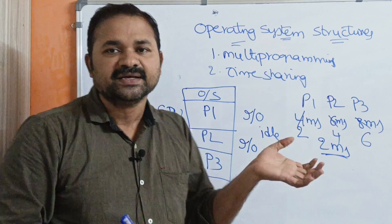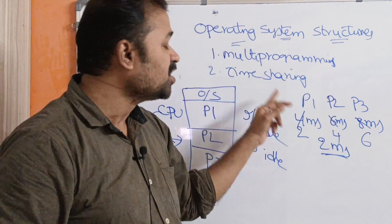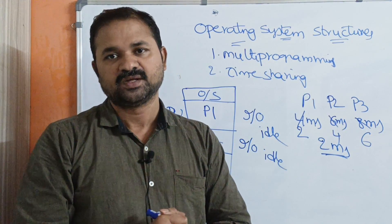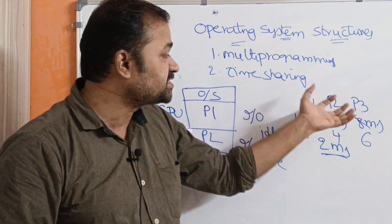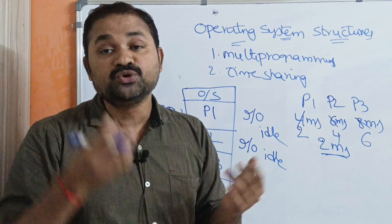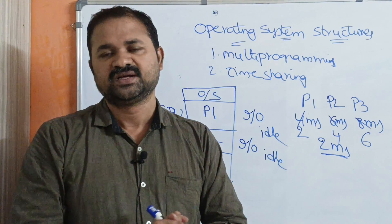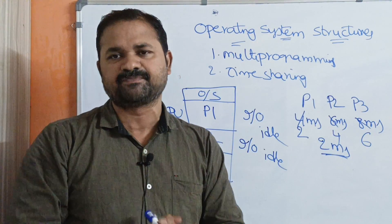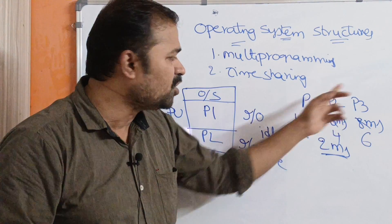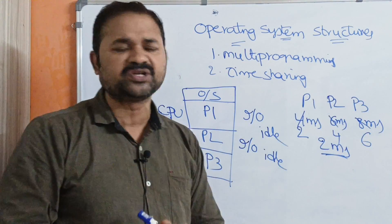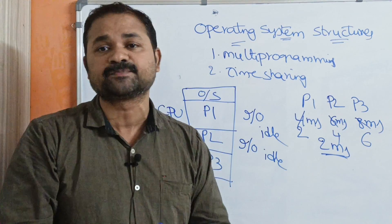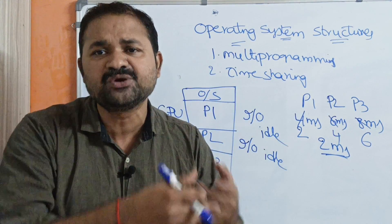The CPU switches from one process to another very frequently. That is why time sharing systems produce more interactiveness. The user feels — let us say we have 3 users in a multi-user system — P1 belongs to user 1, P2 belongs to user 2, P3 belongs to user 3. So all 3 users will feel that the CPU is executing their process only.